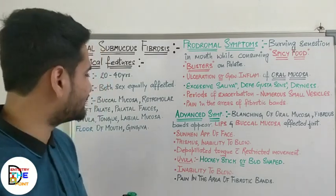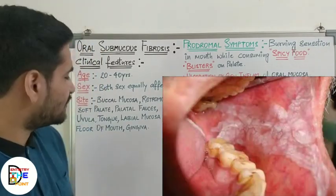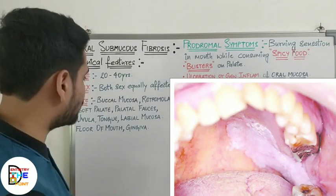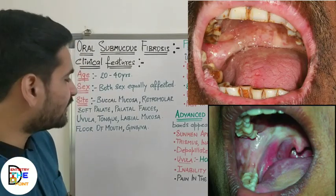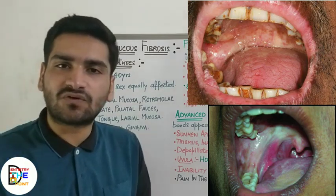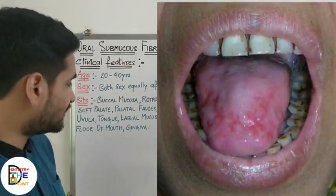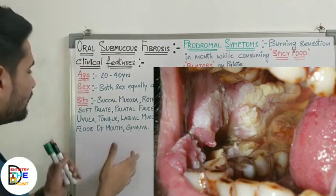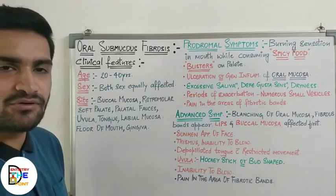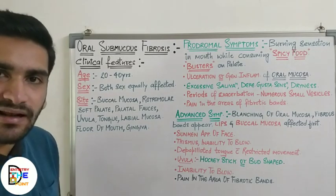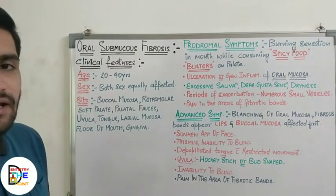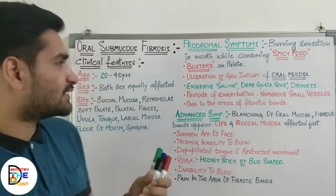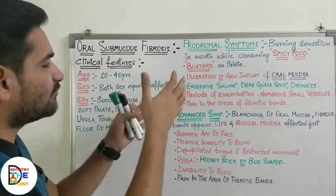The most common sites are: first and foremost, the buccal mucosa, then the retromolar area, soft palate, palatal fauces or facial pillars, tongue, uvula, labial mucosa, floor of the mouth, and gingiva. So these are the most common sites of oral submucous fibrosis.